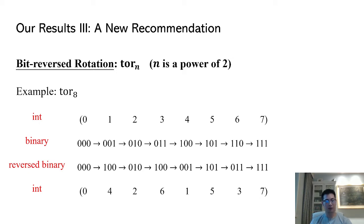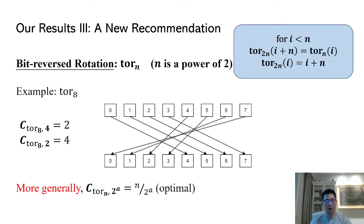For example, when n is 8, we can write out the cycle notation of Tor 8 in the following way. First, write down 0 to 7 in a cycle notation. Second, convert each integer into a binary string of length 3. Then reverse the order of these binary strings and convert them back to integers. The resulting cycle is Tor 8.